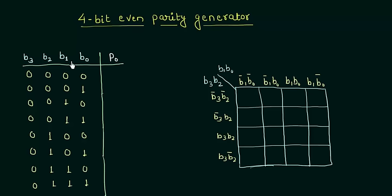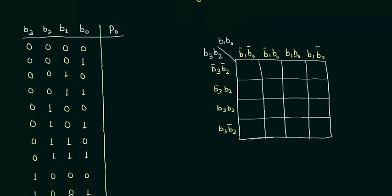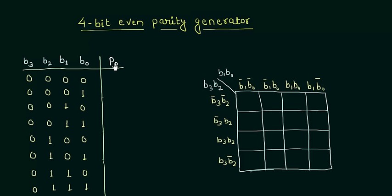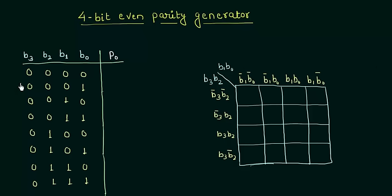Let's move to the truth table. As we are talking about the 4-bit parity generator, there are 4 bits B0, B1, B2, and B3, and 16 possible combinations. The only thing we have to do now is fill in the parity bit P0. For the first combination — all four zeros — P0 should be 0. In the second case there is an odd number of 1s, so P0 will be 1 to make it even. The total bits should be even including this parity bit.